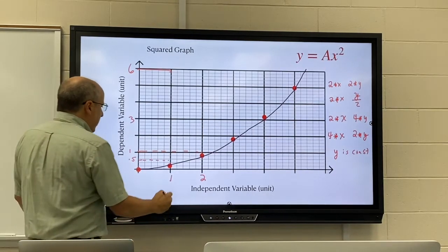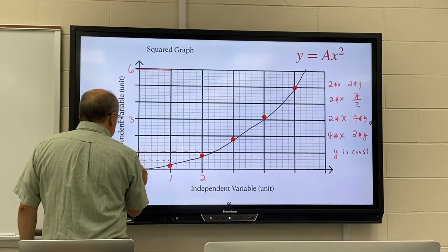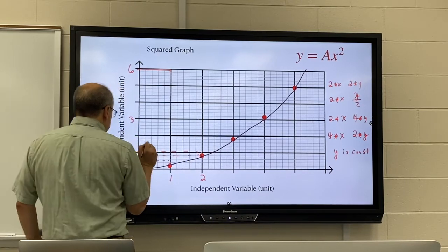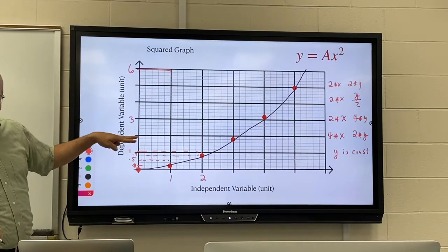Squared graph - I go from one to two, I went from about 0.2 to 0.8. So I doubled my X and I four times my Y.